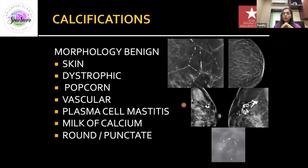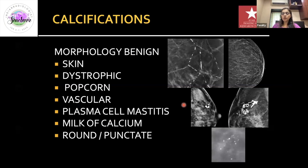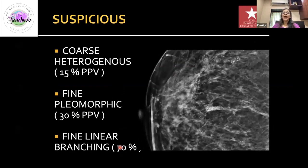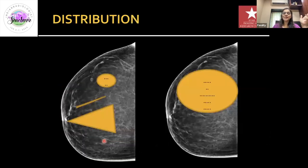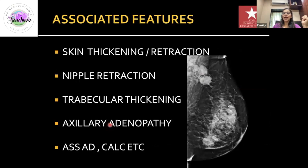Calcifications fall into morphologically benign and morphologically suspicious categories. Benign-appearing calcifications include skin, dystrophic, popcorn, plasma cell mastitis, milk of calcium, and punctate calcifications. Suspicious calcifications include coarse heterogeneous, fine pleomorphic, and fine linear branching — with fine linear branching having a positive predictive value of almost 70 percent. Distribution can be diffuse, grouped, linear, regional, or segmental.